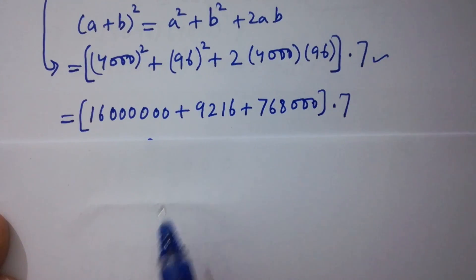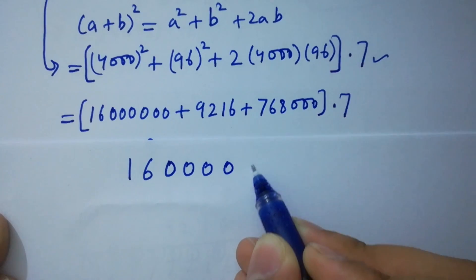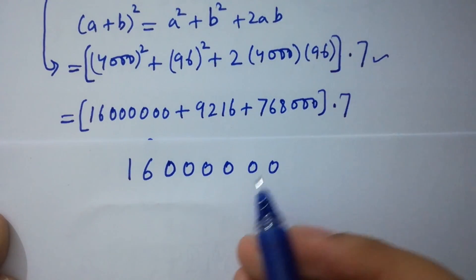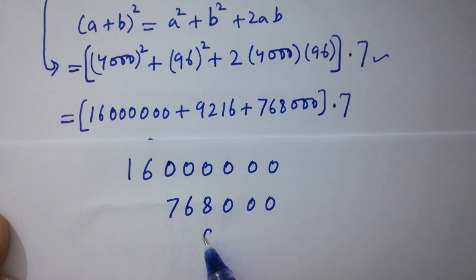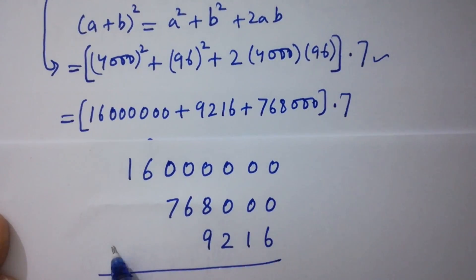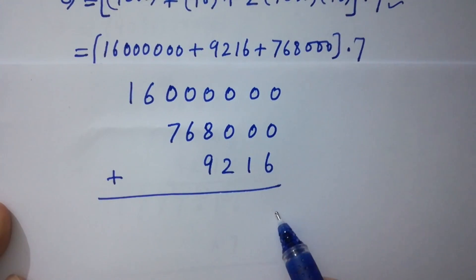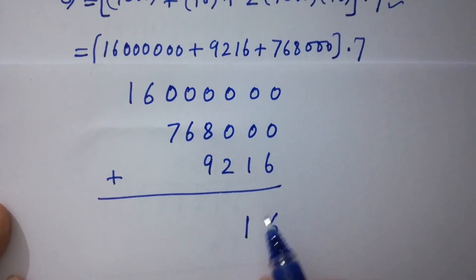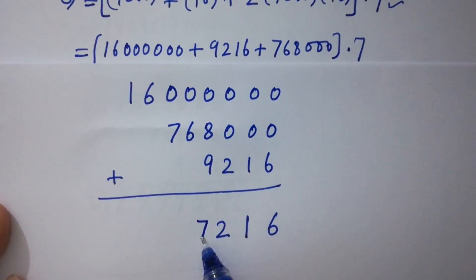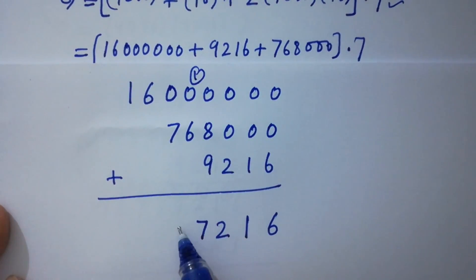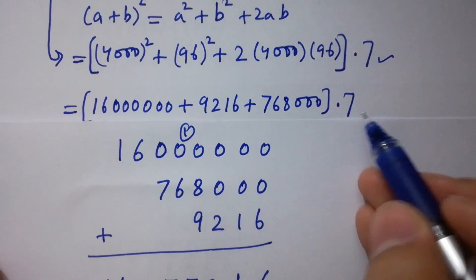In the next step we can write it as 16,000,000 plus 768,000 plus 9216. Adding them: units digit 6, tens digit 1, hundreds digit 2. Then 9 plus 8 is 17 — write 7 carry 1. Then 6 plus 1 is 7, then 7, then 1, then 6. So we get 16,777,216. In the next step I am going to multiply by 7.